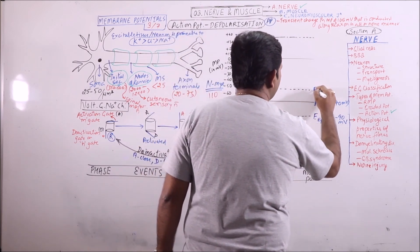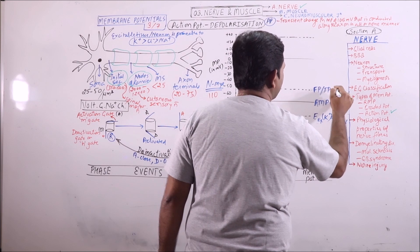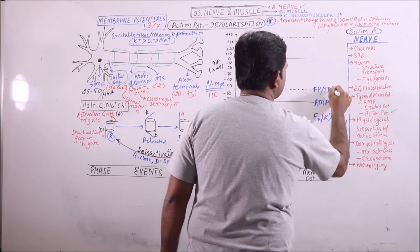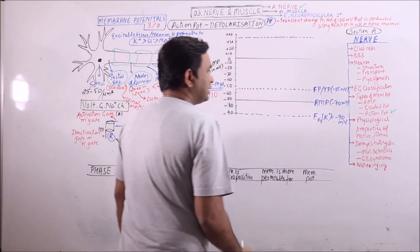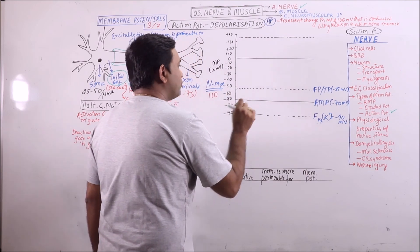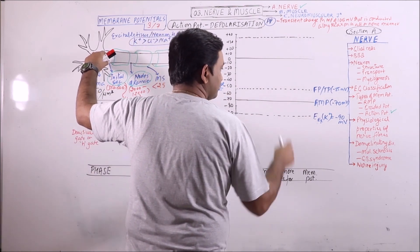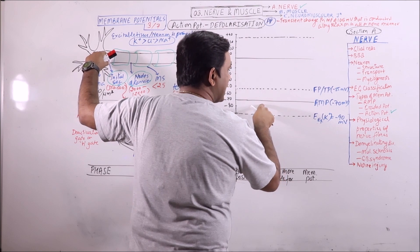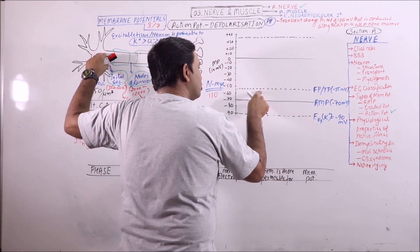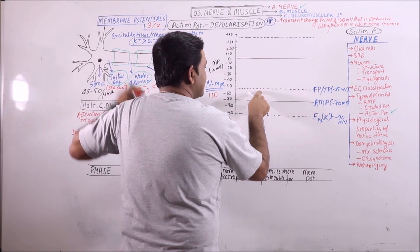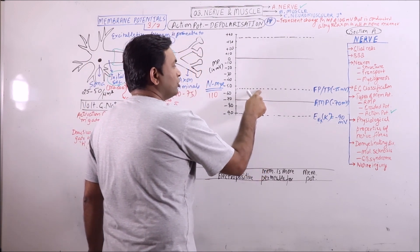Minus 55 millivolts is the firing potential, or threshold potential. Any depolarization in the soma should increase the RMP from minus 70 to minus 55 millivolts — that is a depolarizing change of plus 15 millivolts — for action potential to be initiated.